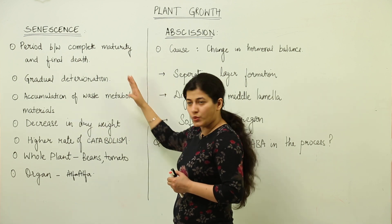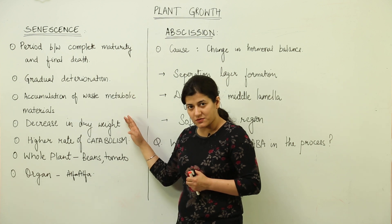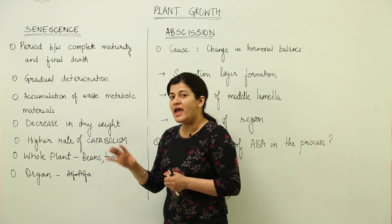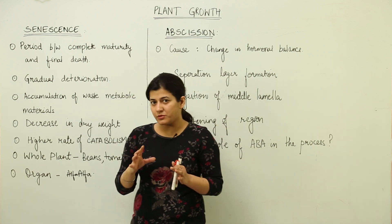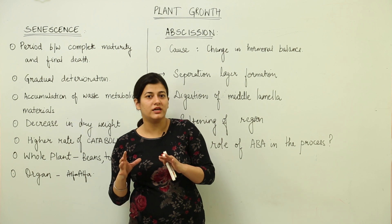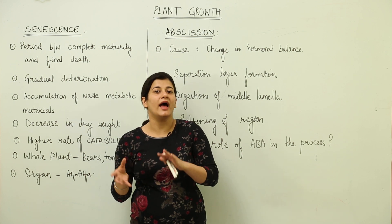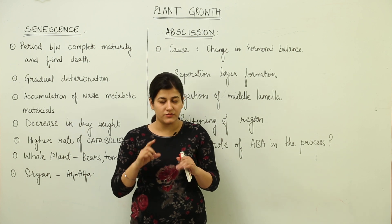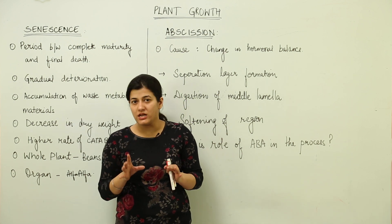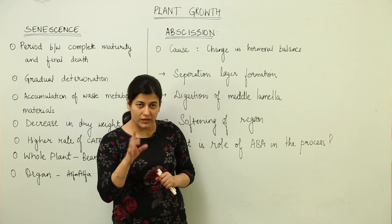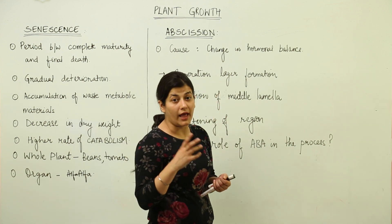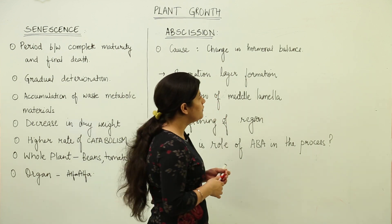There would also be a decrease in dry weight. Whenever a plant is showing these symptoms, it is in the period of senescence. Now, the perennial plants — not the annual plants — are particularly relevant here. So we come across two new terms: annual and perennial.